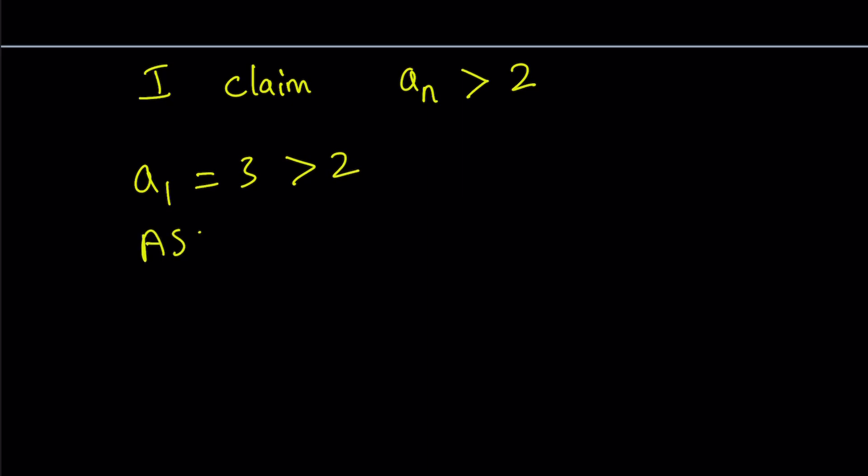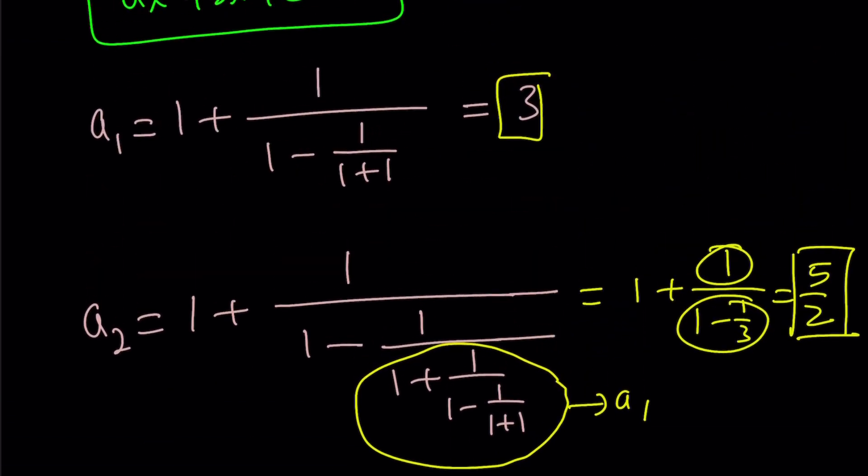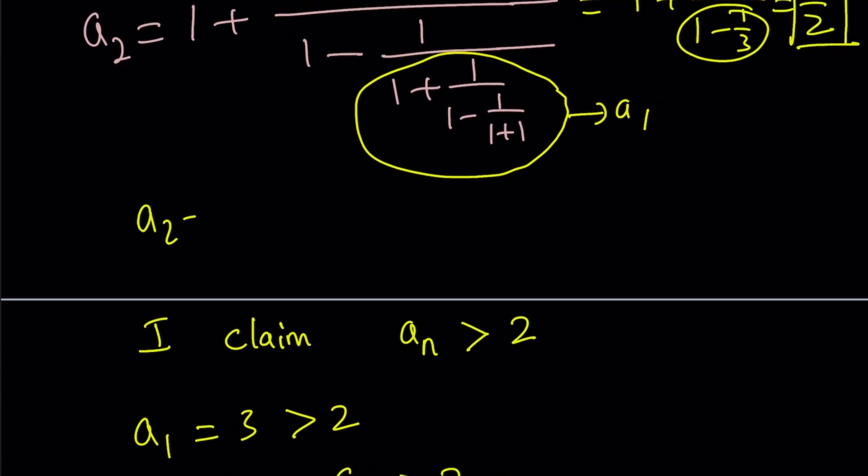Then we're going to assume, we're doing proof by induction, assume that a sub k is greater than 2 for some k greater than or equal to 1. And if we assume the following, then what is going to happen? Let's take a look at a sub k plus 1. If we can make a sub k plus 1 greater than 2, if this implies that, then we're good. But a sub k plus 1 is, remember, when we were writing a sub 2, we actually write it this way. a sub 2 is 1 plus 1 over 1 minus 1 over a sub 1.